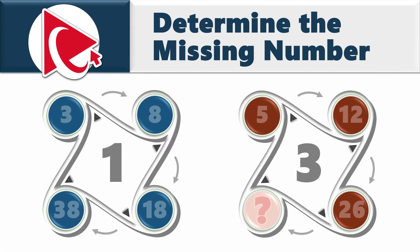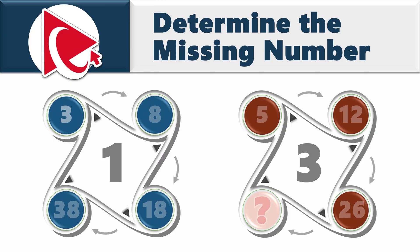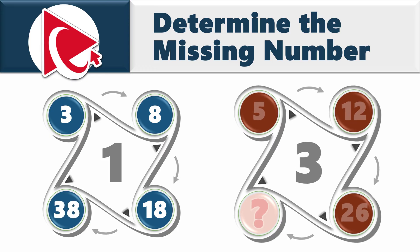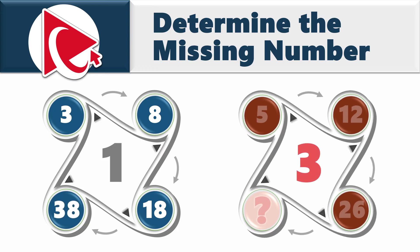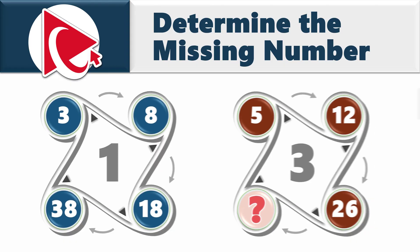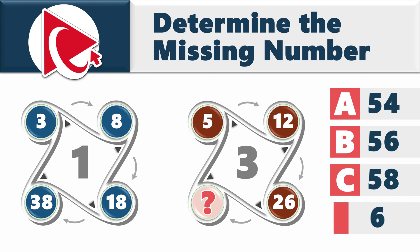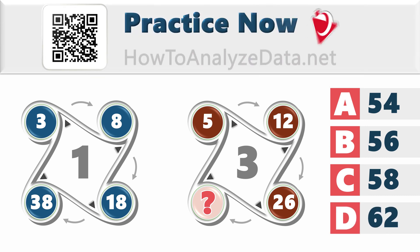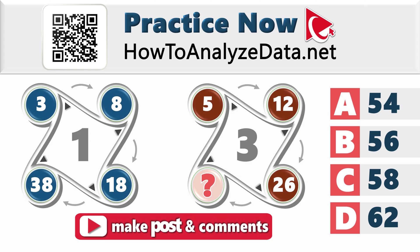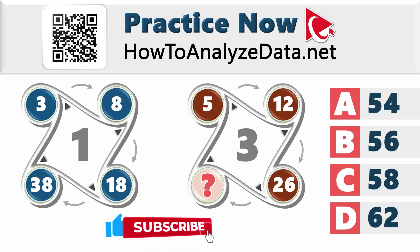You're presented with two unusually looking shapes, both with numbers inside and numbers in the four corners. The first shape's inside number is 1, then the numbers go 3, 8, 18, and 38. For the second shape, the inside number is 3, then the sequence continues to 5, 12, 26, and then the missing number. Choices: A: 54, B: 56, C: 58, D: 62. Use your brain power to crack this solo and share your solution in the comments.